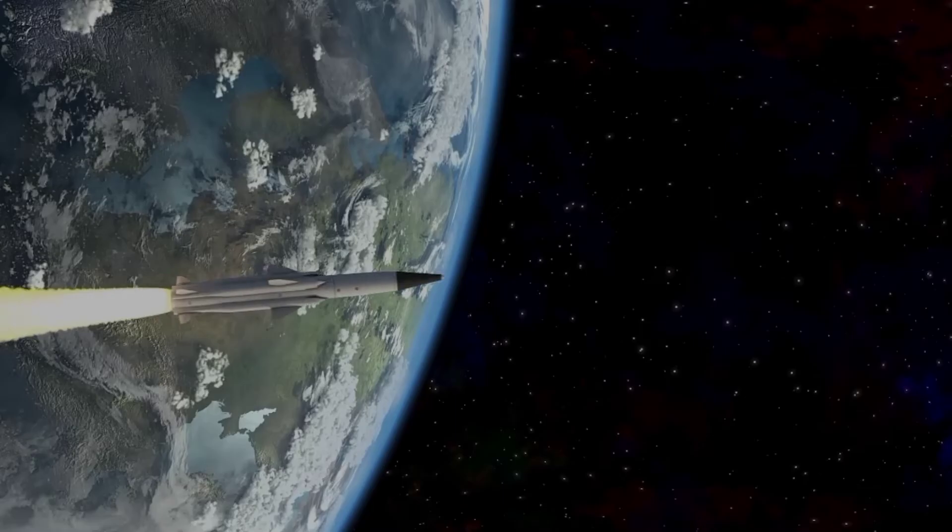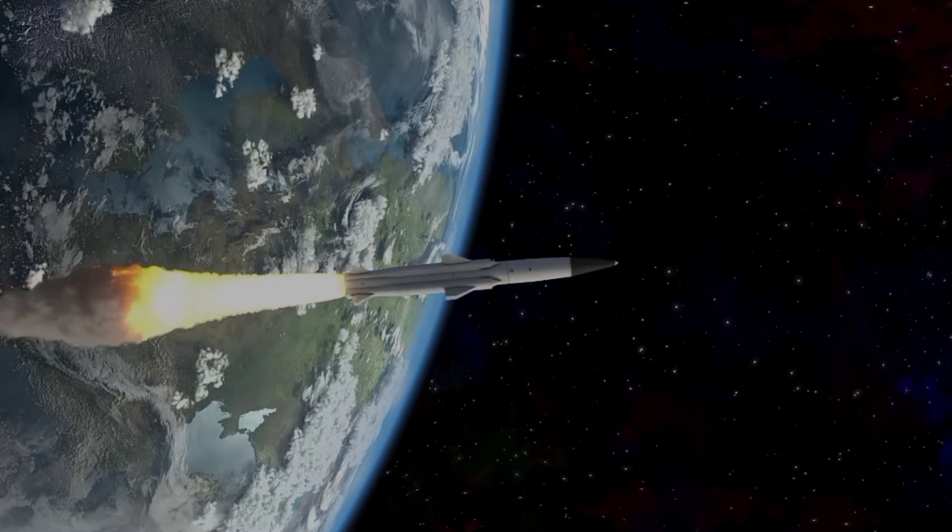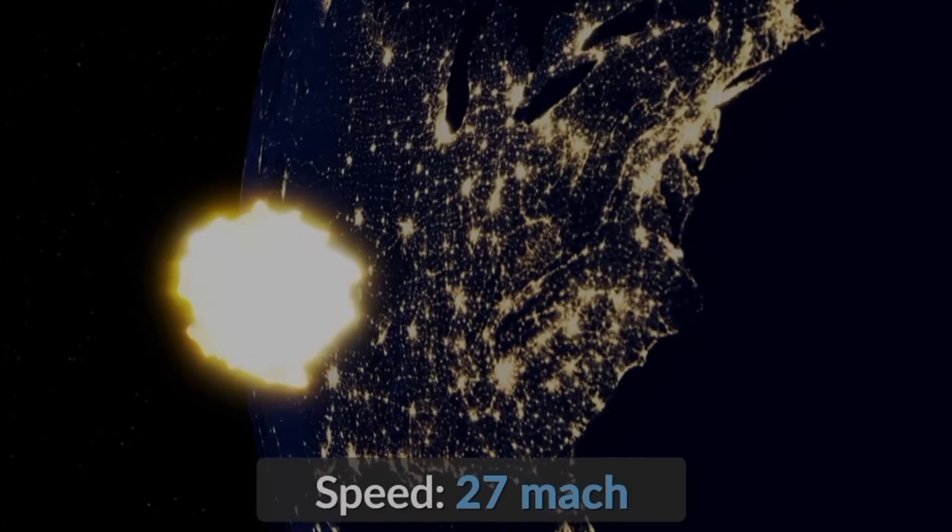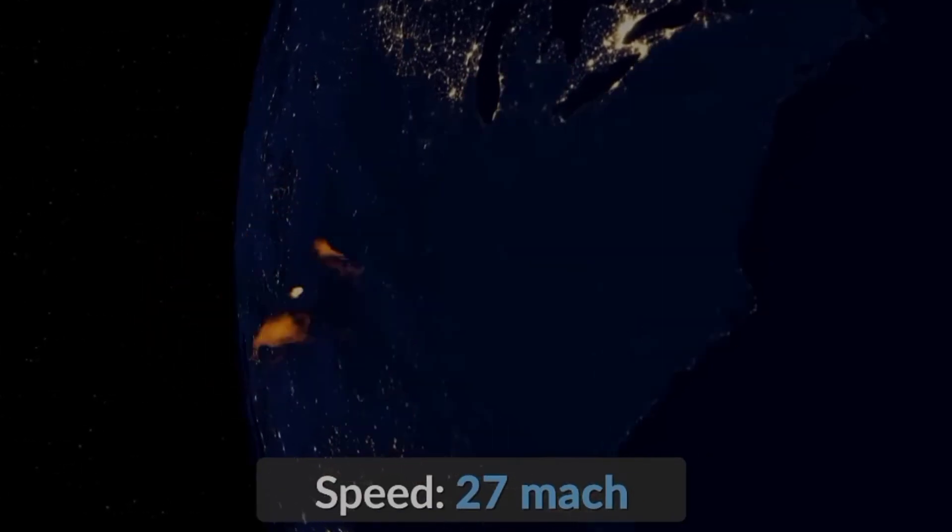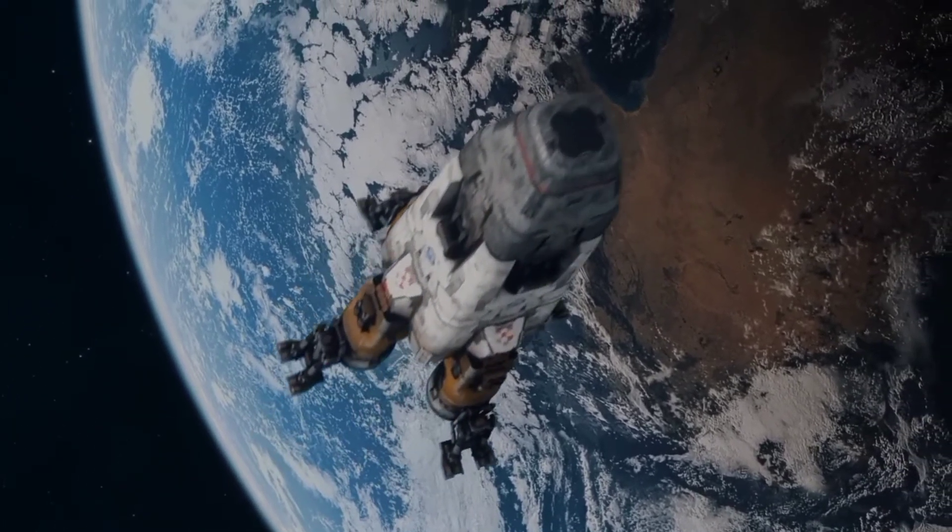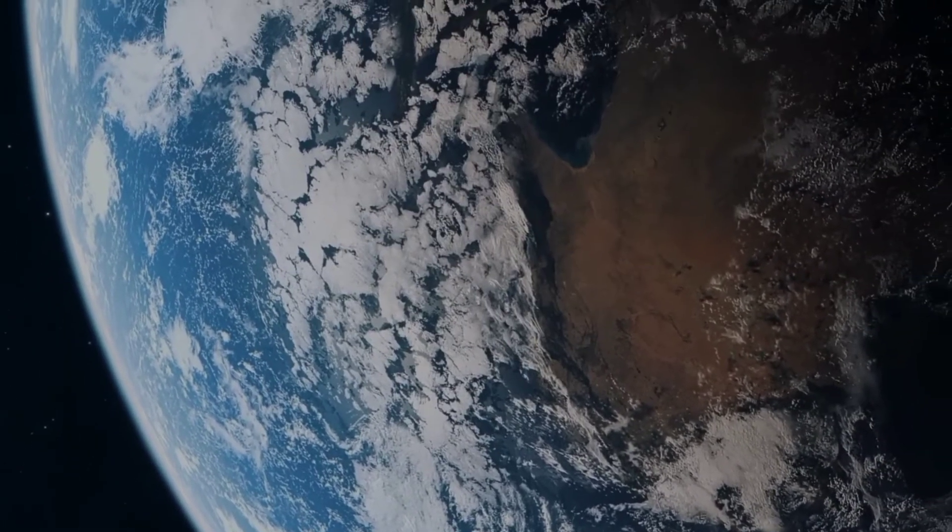Once launched, a FOBS takes off to low-Earth orbit, circling the planet for as long as necessary till its target is in sight. Once the target is spotted, the hypersonic missile de-orbits, clocking its Mach 27 top speed. The FOBS can be pictured as a space shuttle that's fitted with a nuclear warhead as its payload, rather than a capsule full of astronauts.